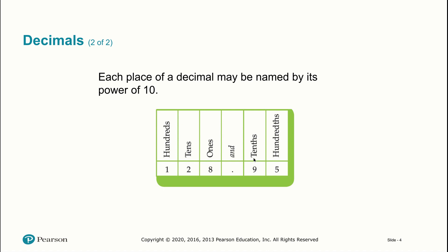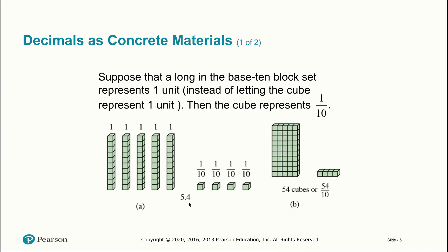So this is the tenths place, this is the hundredths place. The ones place tells you how many ones there are; the tens place tells you how many tens; the hundredths place tells you how many hundredths there are in this number. If you want to represent decimals using the concrete model of base ten blocks, how you begin depends on how many digits you have after the decimal point.